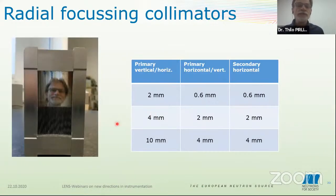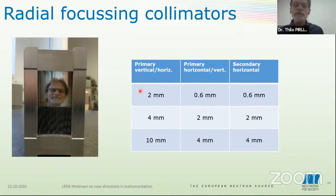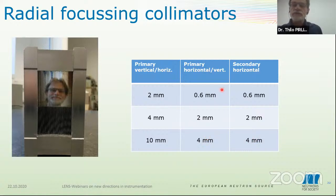I'm a fan of collimators. This is the set we have on Salsa. We use, for the vertical beam definition, 2, 4, or 10 millimeters beam height. And horizontally, we go down to 0.6 millimeters. We have two and four millimeters primary and secondary for measurements in larger samples.